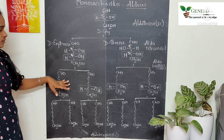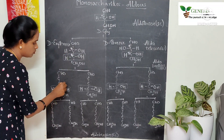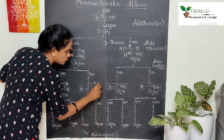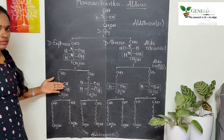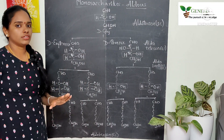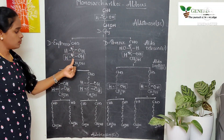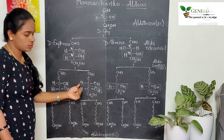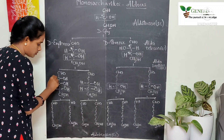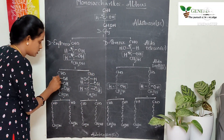The aldopentoses are derivatives of the aldotetroses. Using these structures as reference, the farthest carbon configuration is fixed. Then, working inward: for one derivative, OH is on the right and H on the left; for the other, OH is on the left and H on the right. One more chiral center remains free, giving us the final configuration. These aldopentose compounds contain three chiral centers.